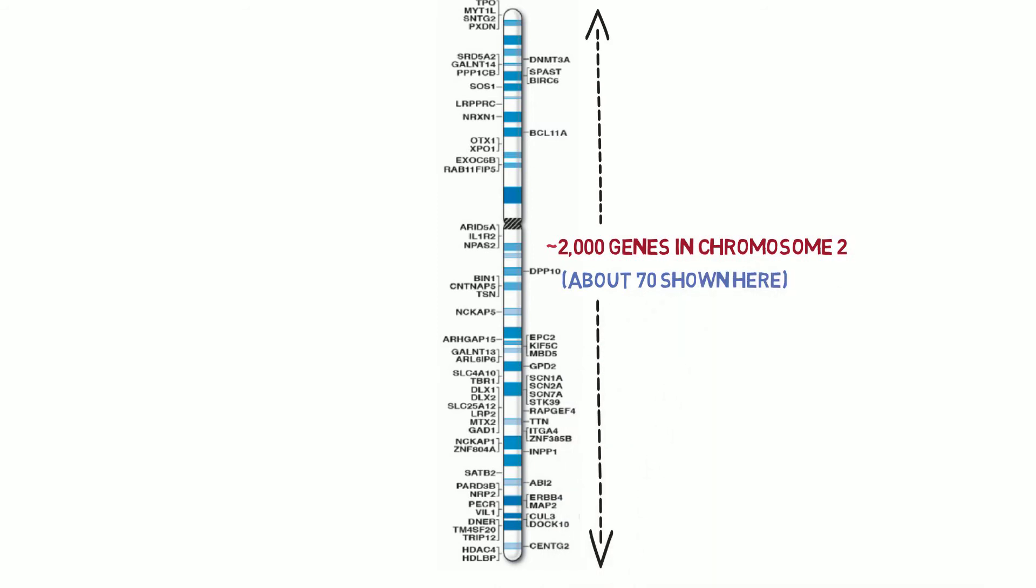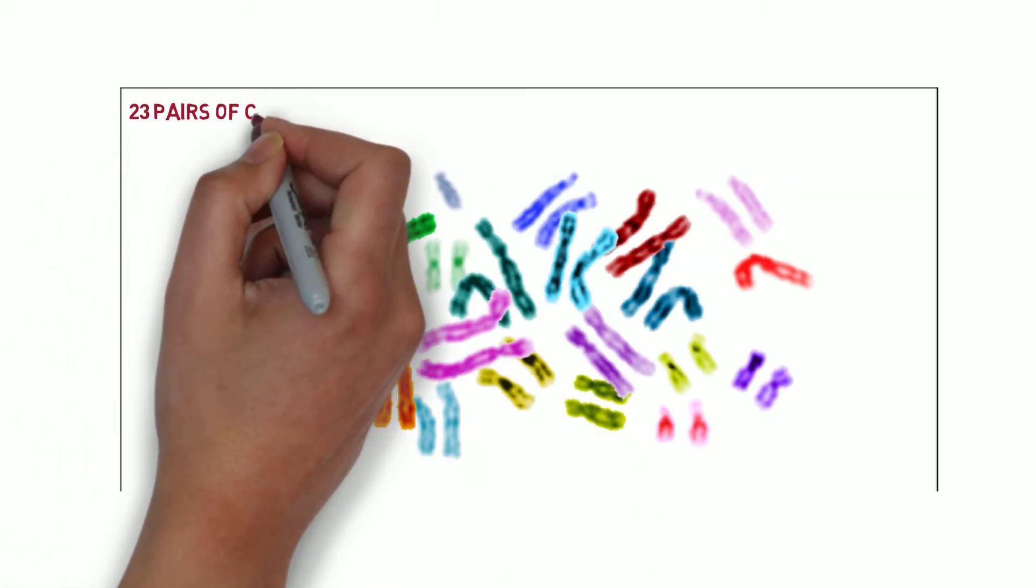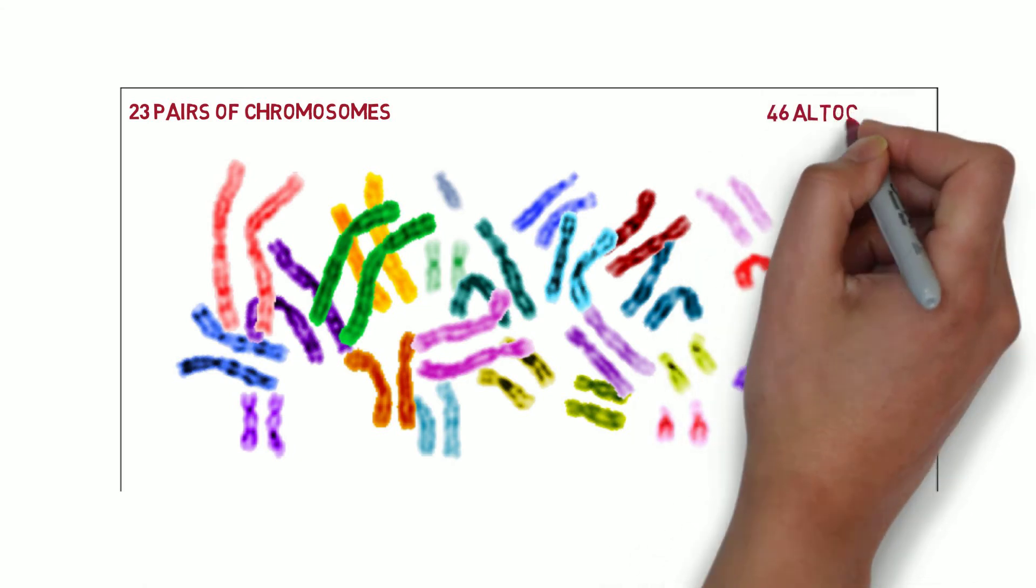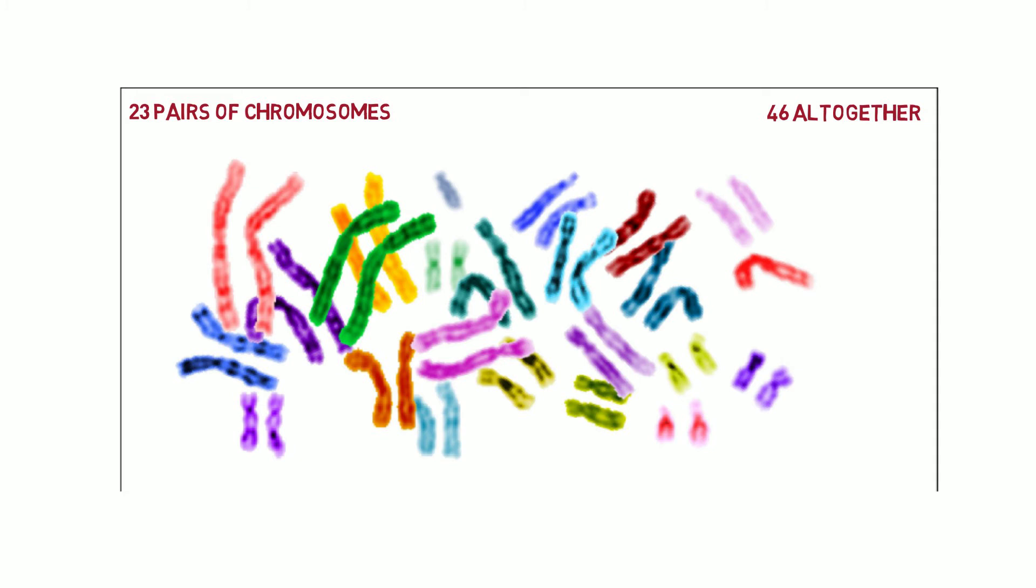Altogether, we've got 23 different chromosomes, and we've got a pair of each one, one member of which came from our mother and the other from our father, and that gives us 46 altogether. On those 23 different chromosomes, each represented twice, are about 20,000 genes.